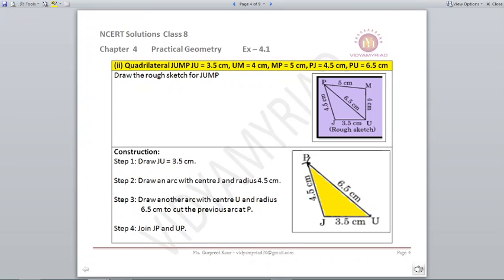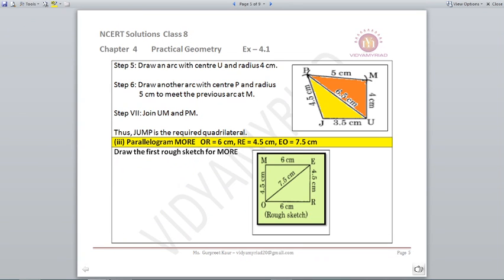Now half is made, now we need PM and we need MU. Now what you are going to do is from the point P and from the point U you will take your measurements. From U first check the measurement 4 cm with the help of a compass and scale, draw an arc. And from P cut it on that previous arc and name it as M. So join MP and join MU, this will be your required quadrilateral JUMP.